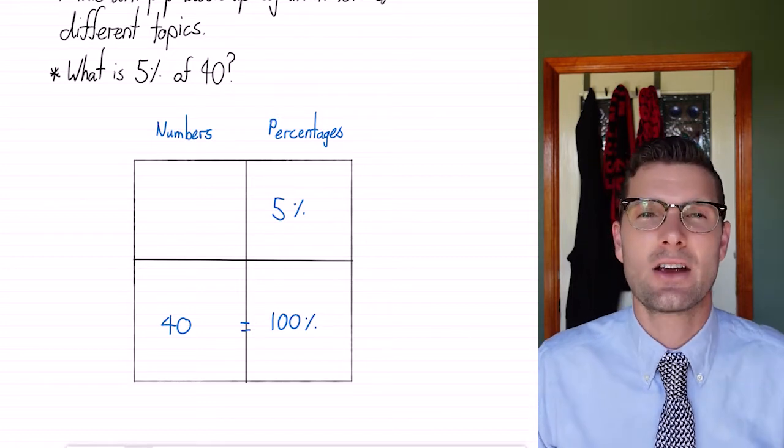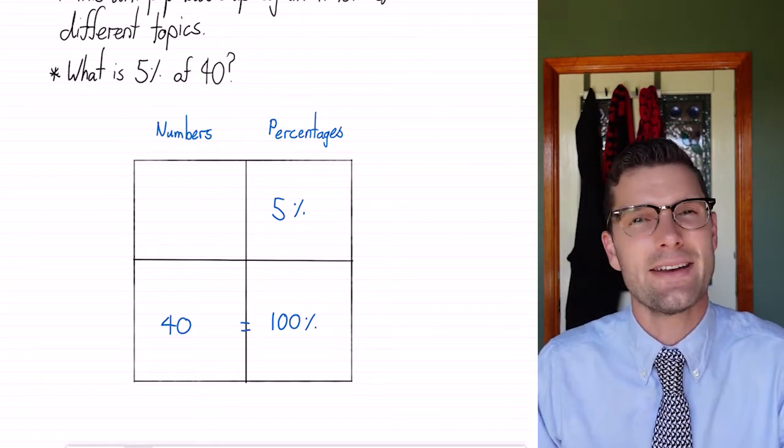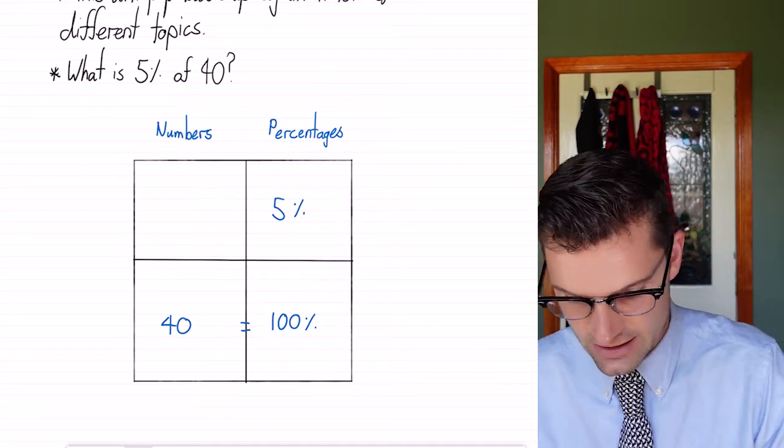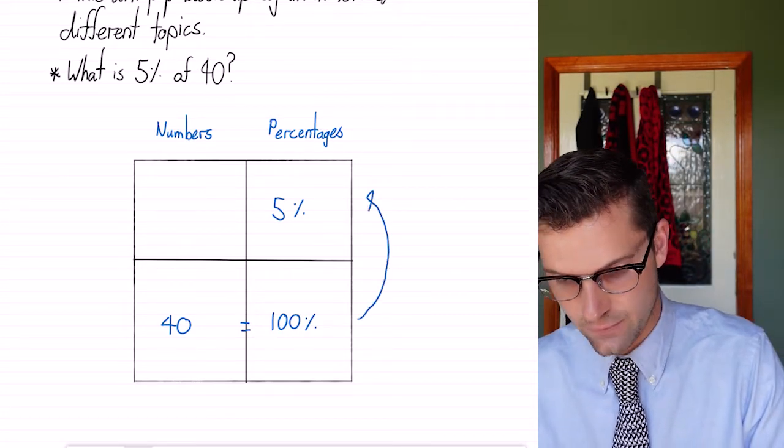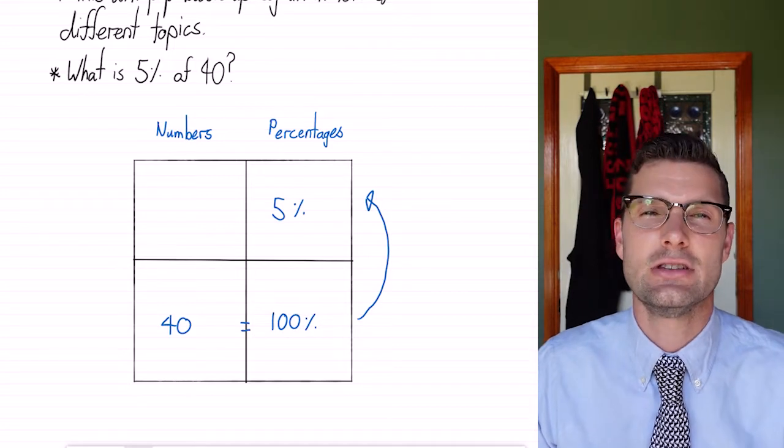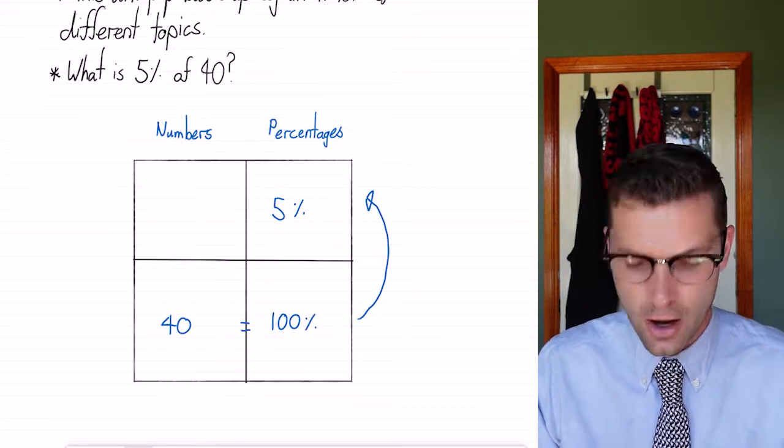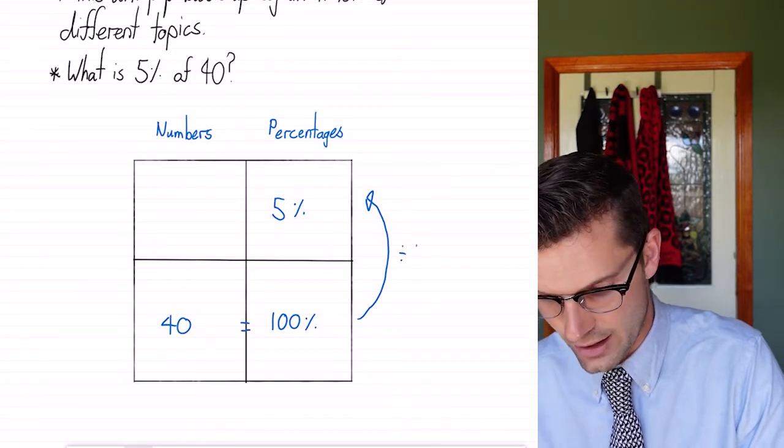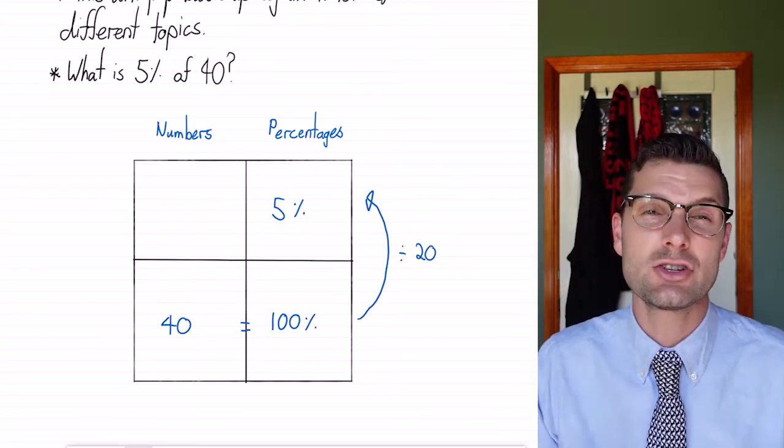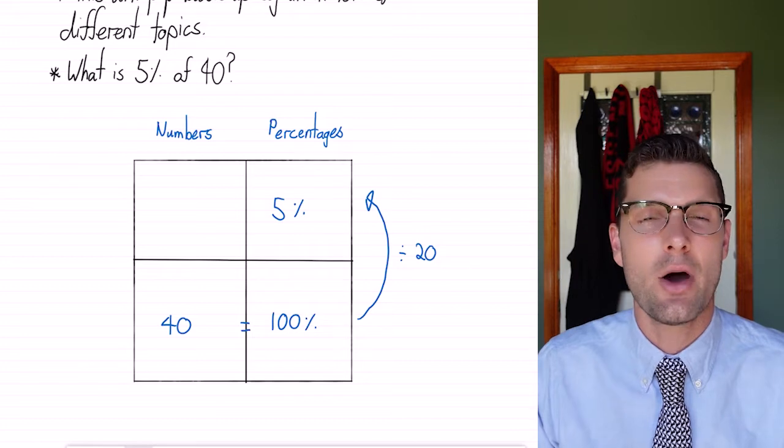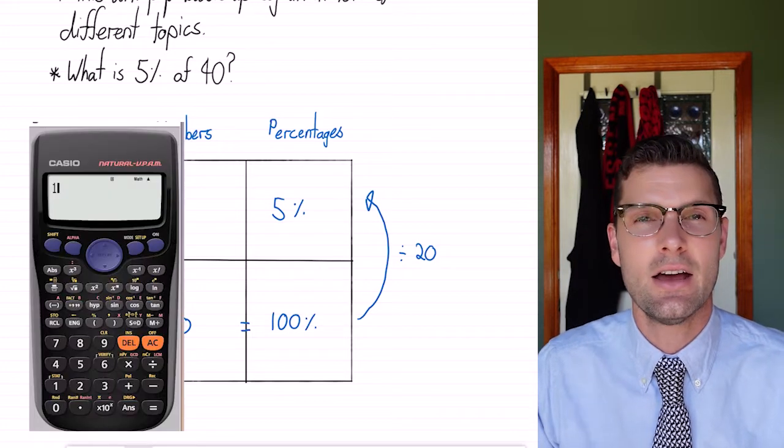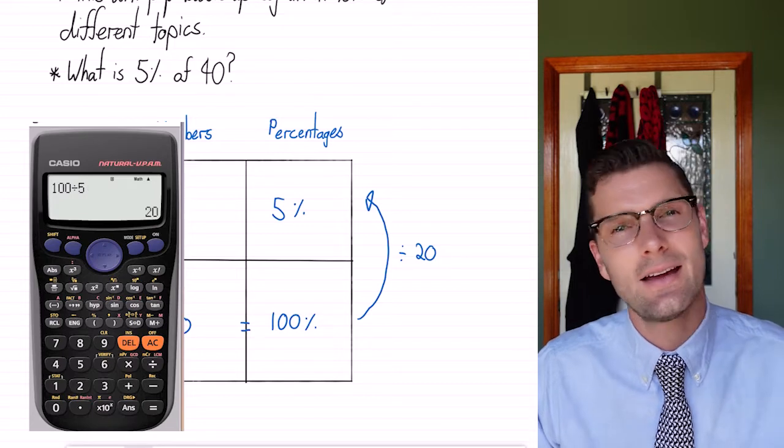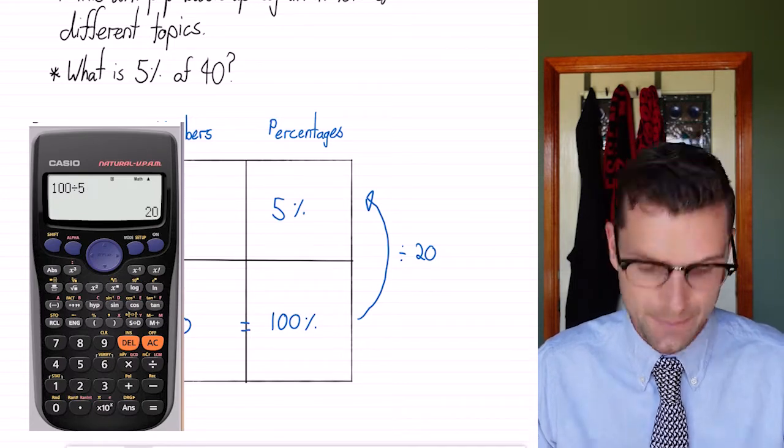So this comes down to the idea that whatever we do to one side we must do to the other. So if I want to change this 100% into 5%, just using operations of times and divide, I could see that I have to divide this by 20. If you are struggling to find out what number to divide by, you can use your calculator. So if I go 100 divided by 5, that gives me the answer of 20 and that's what I need to divide by.